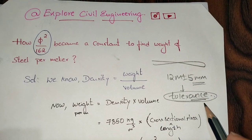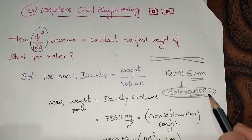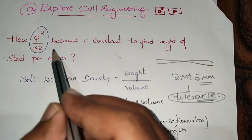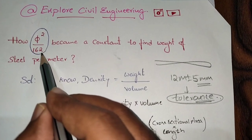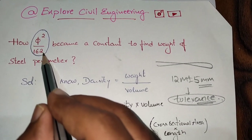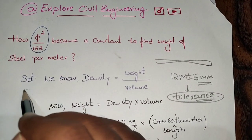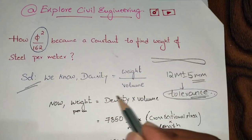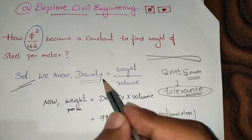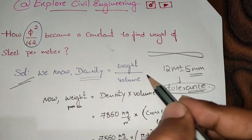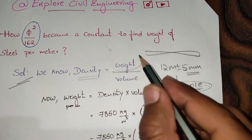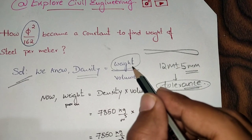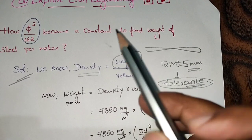Now how φ²/162 became a constant to find out the weight? Let's get into the solution. We know density equals weight by volume. So now we need weight, we want to find out weight per meter.